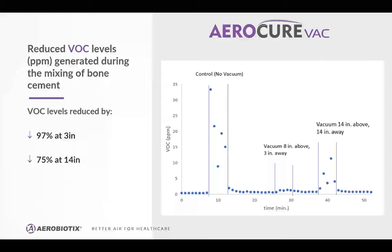We generated reduced VOC levels during the mixing of bone cement. VOC levels were reduced by 97% at the position 8 inches above and 3 inches to the side, and 75% at the 14-by-14-inch location. On the graph, you can see the very large amount of contamination in the control group, reaching nearly 35 parts per million volatile organic compound directly above the mixing bowl. With the vacuum 8 inches above and 3 inches to the side, there is very little increase in ambient methyl methacrylate fumes. At 14 inches above and 14 inches to the side, levels are somewhat higher than the 8-by-3 position, but still very significantly below the control.